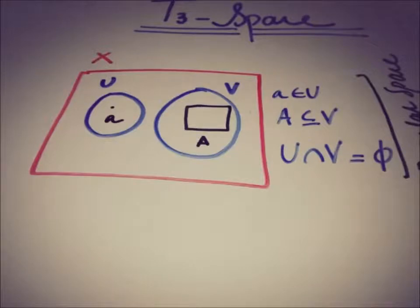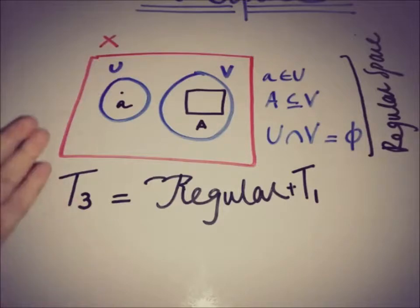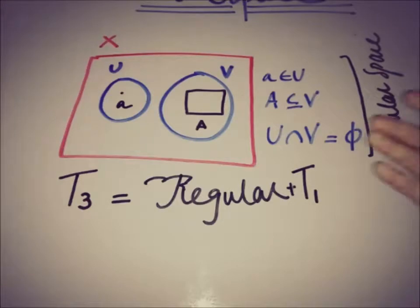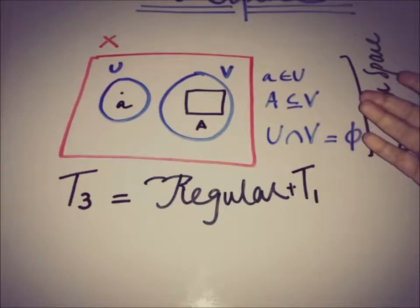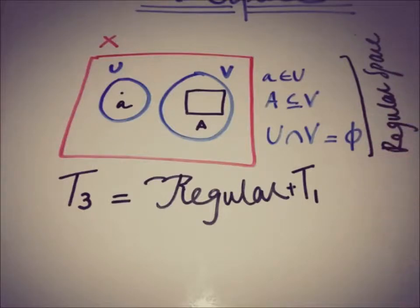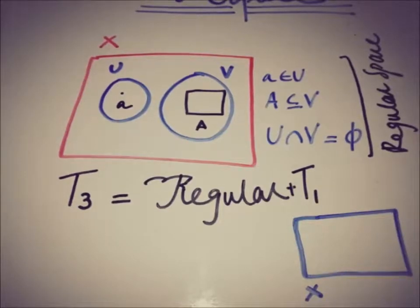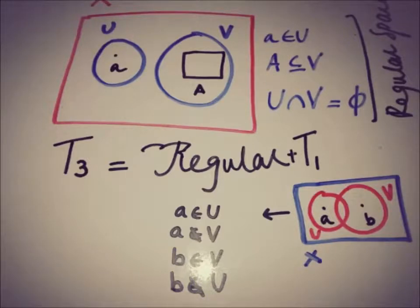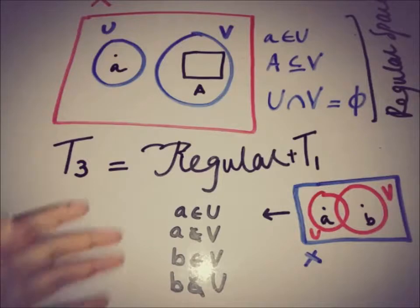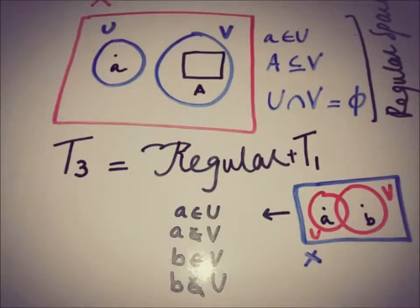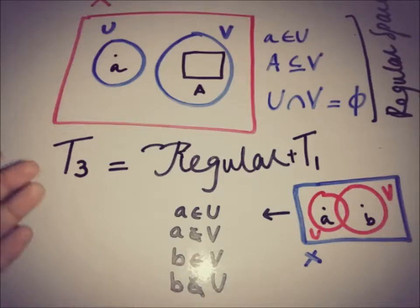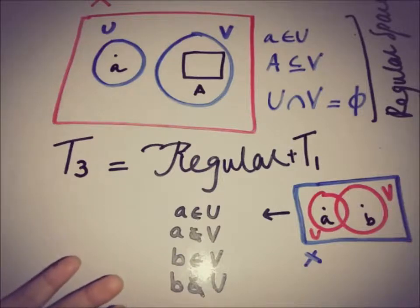A T3 space is a regular T1 space. The condition of the regular space is that we have two disjoint open sets, a closed set, and a point where the point must not be in that closed set. Recalling the T1 space: a space is said to be T1 if we have two points A and B in that topology and two open sets U and V such that A belongs to U but not V, and B belongs to V but not U. In T1 space there is no restriction on the open sets to be disjoint. So a T3 space is a regular T1 space — regularity says there must be a closed set and a point, and from T1 we have two open sets, but here instead of two points we have a point and a closed set.